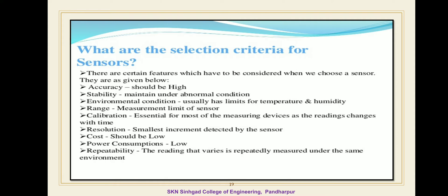There are certain features which have to be considered when we choose a sensor. The first criteria is accuracy — the accuracy of the ideal sensor should be high. Then stability: stability of the ideal sensor means it should maintain performance under abnormal conditions, so stability should be moderate or good.